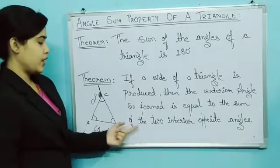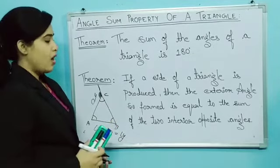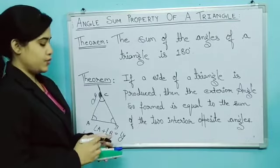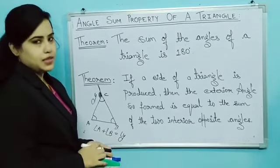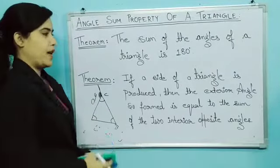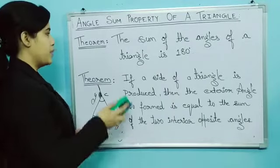So this is the second theorem. If any side is produced, then the extended side will be equal to the two opposite angles. So this is all about the theorem. Now we will solve these examples.